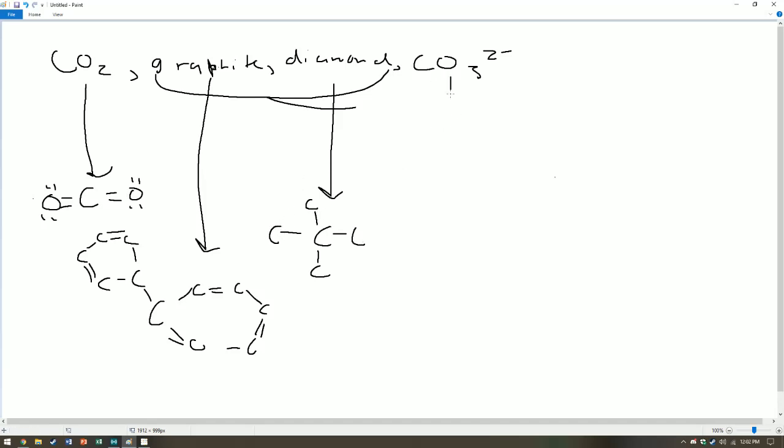And then lastly the carbonate, we would draw a Lewis structure. Technically this has resonance, but one Lewis structure will work for our purposes today. I'm not going through the whole formal process of drawing the Lewis structure, I'm just doing it quickly since I happen to know what these look like.